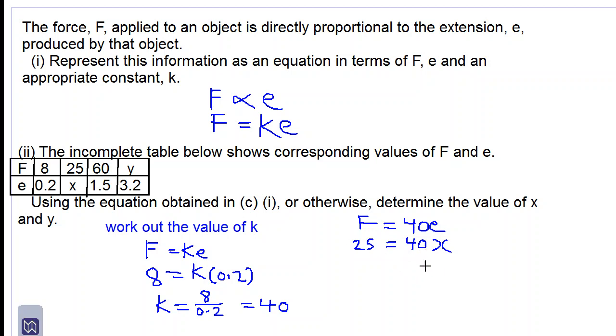Dividing both sides by 40: x = 25/40. Reducing to lowest terms, x = 5/8.